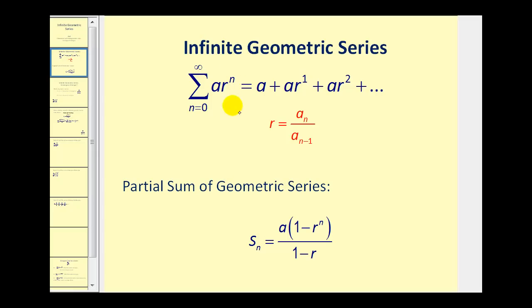If the formula to generate the terms in the series is in the form of a times r raised to the power of n, we have a geometric series. For example, when n is equal to zero, we'd have a times r to the zero, which would just give us a. When n is equal to one, we'd have a times r to the first, then a times r to the second, and so on. To generate each term in a geometric series, we multiply each consecutive term by another factor of r.